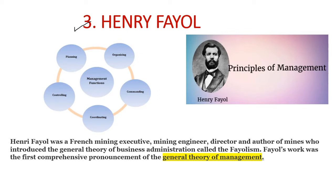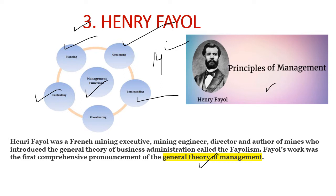The next theory is related to Principles of Management. Henry Fayol developed the general theory of management. Management functions include five types: planning, organizing, directing, controlling. Henry Fayol also gave 14 Principles of Management. He introduced the general theory of business administration, called Fayolism. Fayol's work was the first comprehensive pronouncement of the general theory of management.